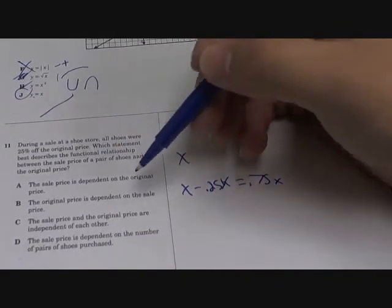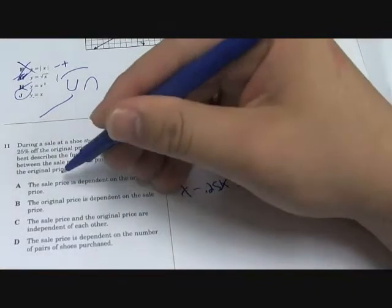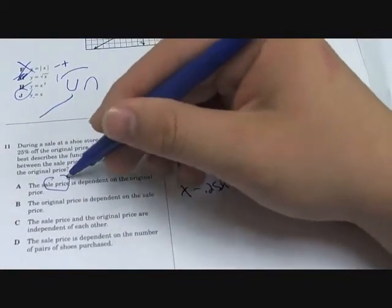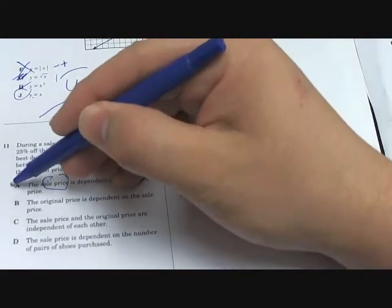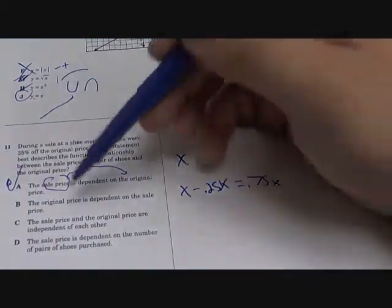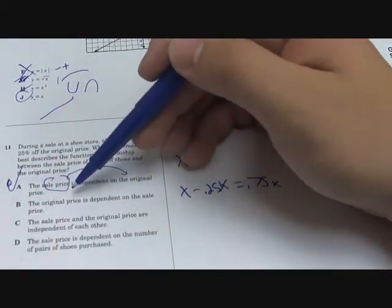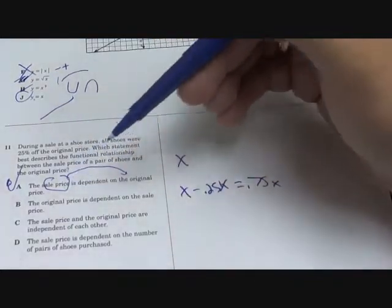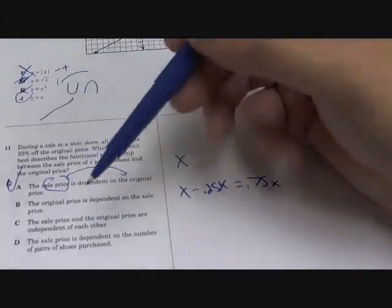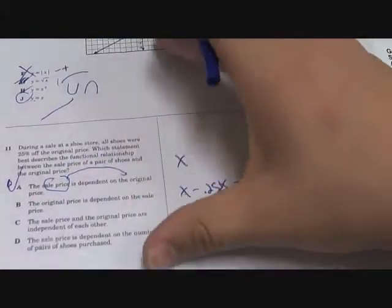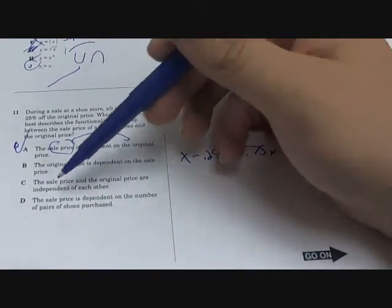The sell price is dependent on the original price, which is true. Dependent means the sell price depends on the original price. The original price is dependent on the sell price - that's no, because it's the other way around. If the original price changes, the sell price can change as well. The sell price and original price are independent of each other - no, we established it's 25% off the original. The answer is A.